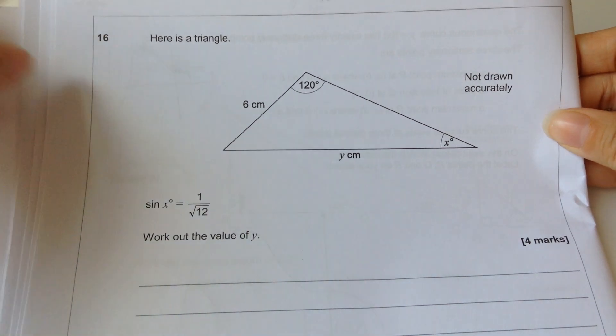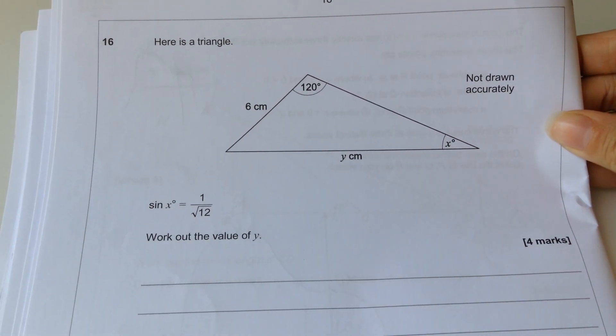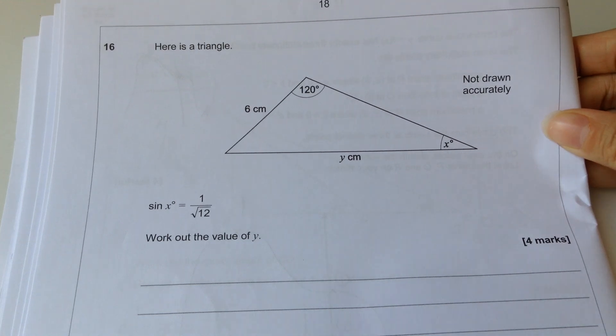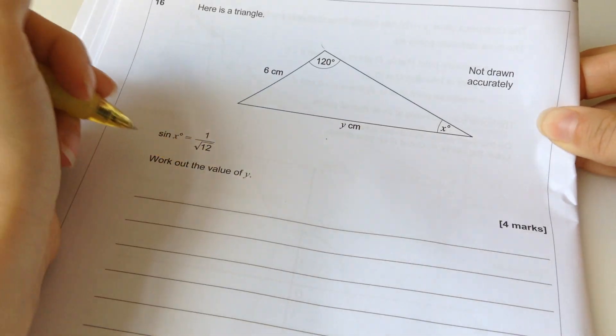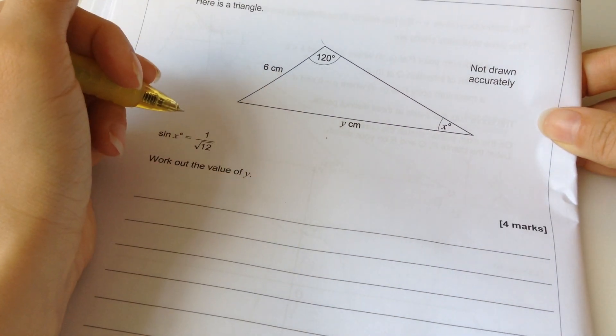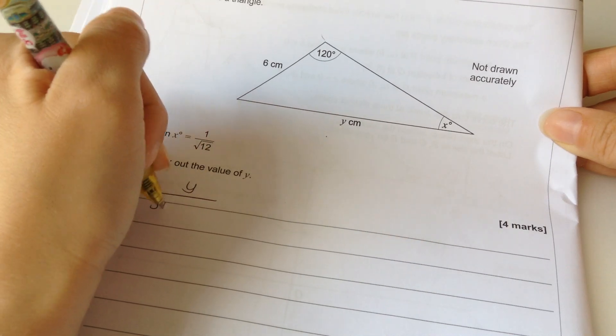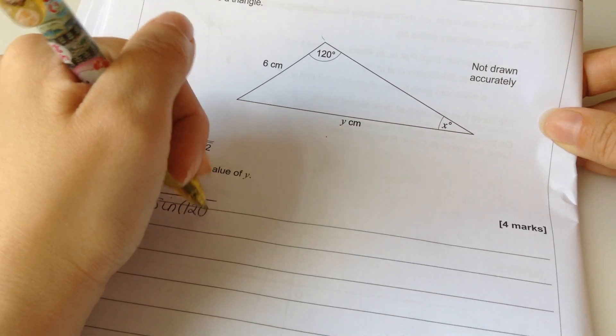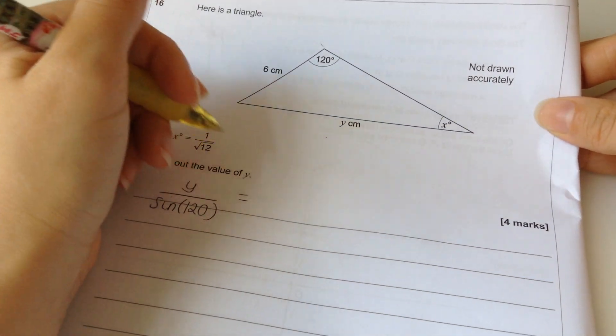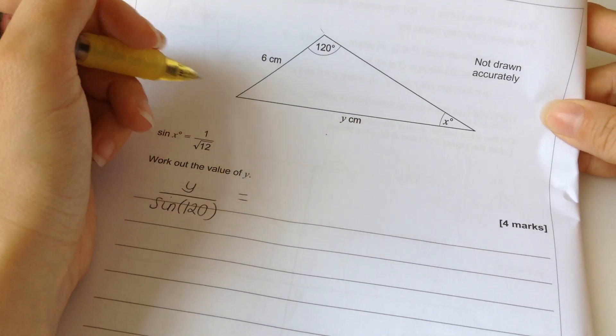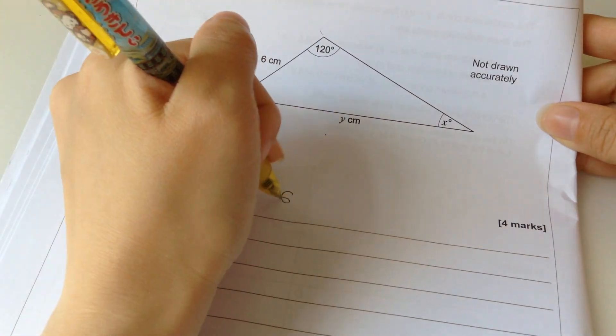Here is a triangle. Cool. Sine x is 1 over root 12. Work out the value of y. So, I'm thinking sine rule. Y over sine 120. Wait, what should I put on the top? Yeah, I should put y on the top. Y over sine 120. Oh, okay, yeah. I know now why people are asking me about 120 this afternoon. Equals 6 over sine x.